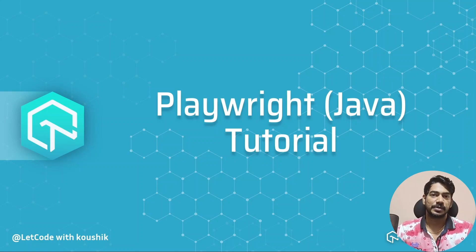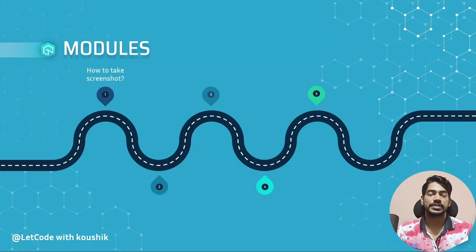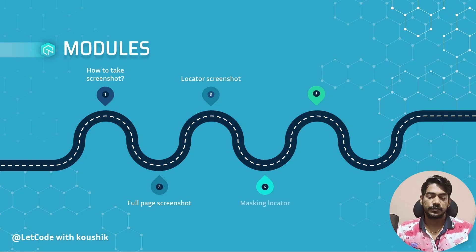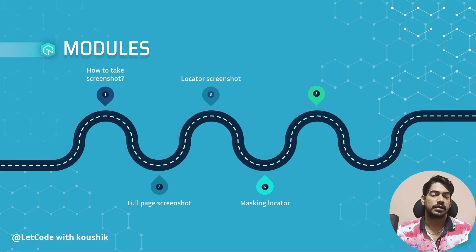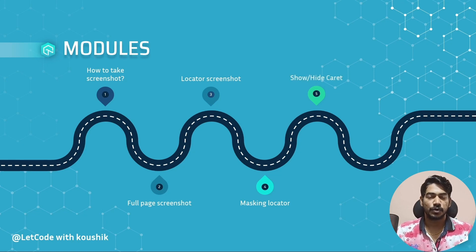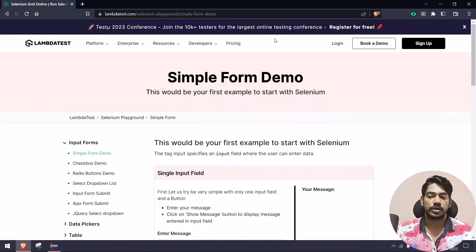Hello guys, my name is Pauschik and welcome back to Lambda Test. In this video we are going to learn how to take a screenshot of the visible portion, a full page screenshot, a screenshot of a particular region or element/locator. We also have a great feature like masking — for example when we take a screenshot of a login page and we want to hide credentials from a client or during a demo. Finally, we'll learn a small trick to hide the caret symbol.